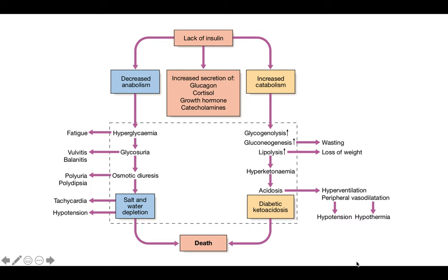Lack of insulin also increases catabolism, leading to increased glycogenolysis, gluconeogenesis, and lipolysis. Increased gluconeogenesis can lead to wasting, and increased lipolysis can lead to weight loss and hyperketonemia. This can present as diabetic ketoacidosis when blood sugars are very high. Acidosis stimulates ventilation, causing hyperventilation, and also causes peripheral vasodilation, leading to hypertension and hypothermia due to heat loss. If diabetic ketoacidosis is not treated, it can lead to death.